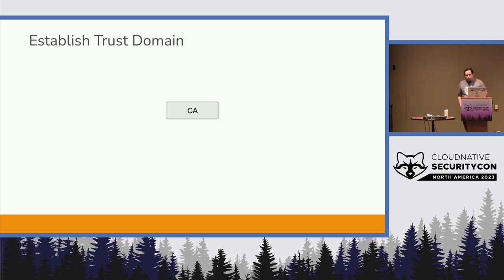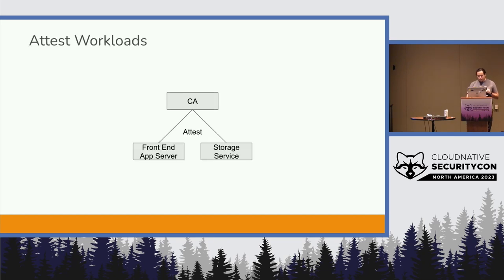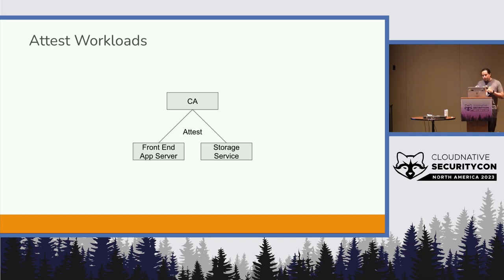In one scenario, you establish a trust domain using standard PKI: set up a CA, and that CA represents a trust domain — every CA you set up independently is a separate trust domain. You then register each workload, resulting in an X.509 certificate. That certificate is basically attestation — you're saying this particular workload follows my process, I've attested it meets my patch set, it's on a device I own and control, and that device meets the set of requirements.